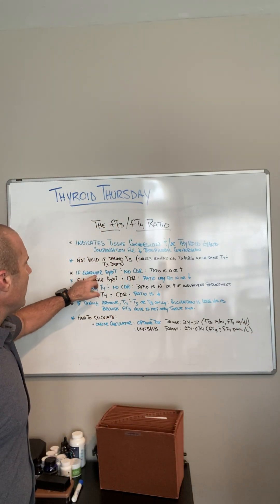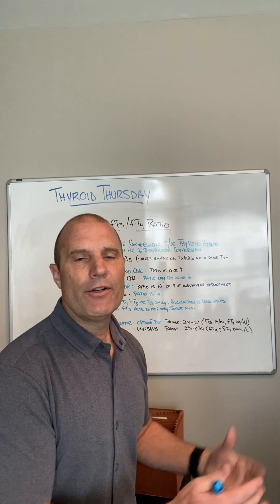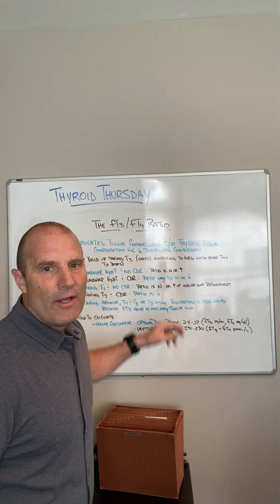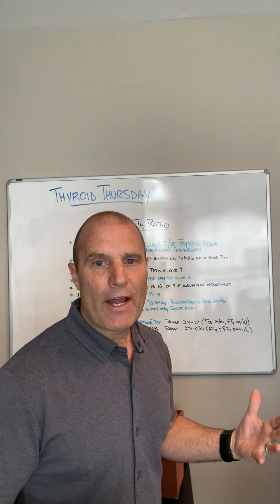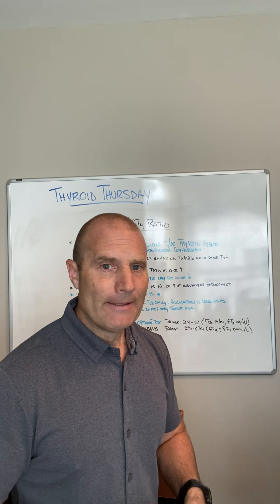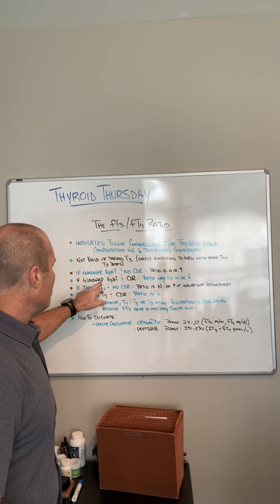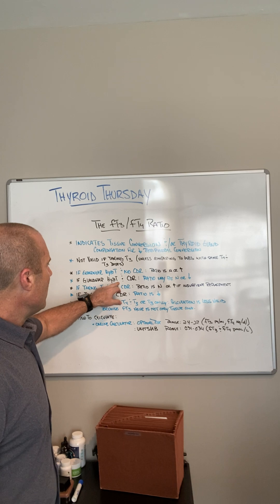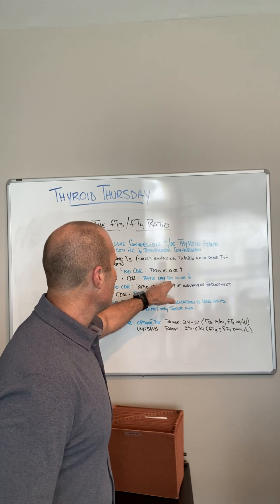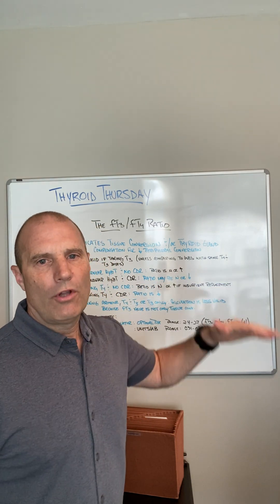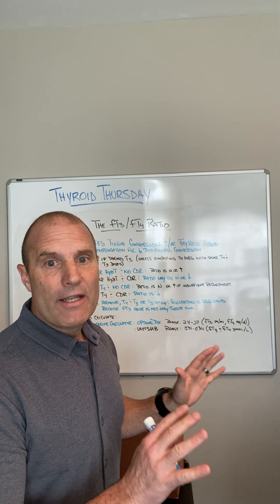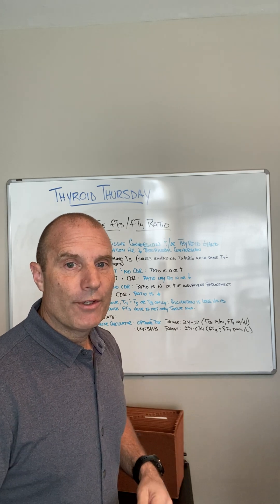If somebody has glandular hypothyroidism — the gland is failing, there's no cell danger response, and the cells are hypothyroid — you're going to see a high ratio, because the cells are starving for thyroid hormone. They'll bring as much T4 in and convert it to T3, so you'll see a high ratio. If there's glandular hypothyroidism with a cell danger response, the ratio may be normal or lower, because even though there's not a lot of T4 in the bloodstream, some cells are still resisting conversion of T4 to T3.